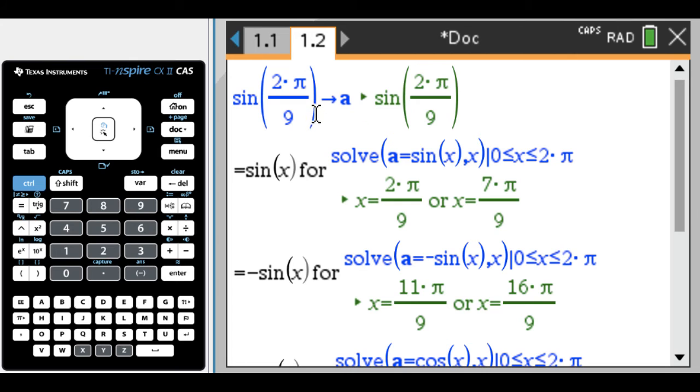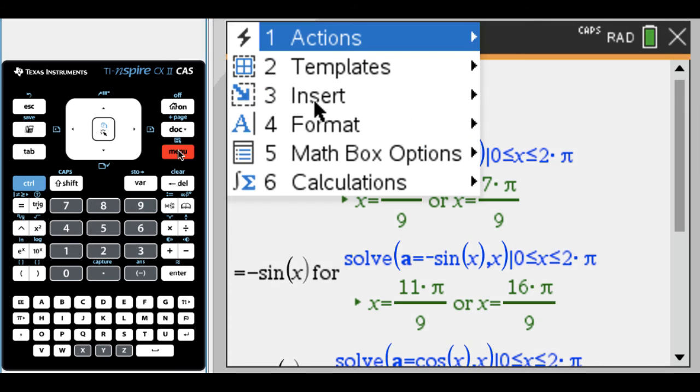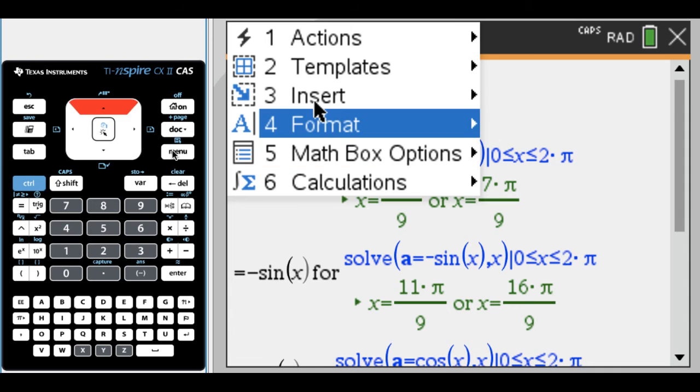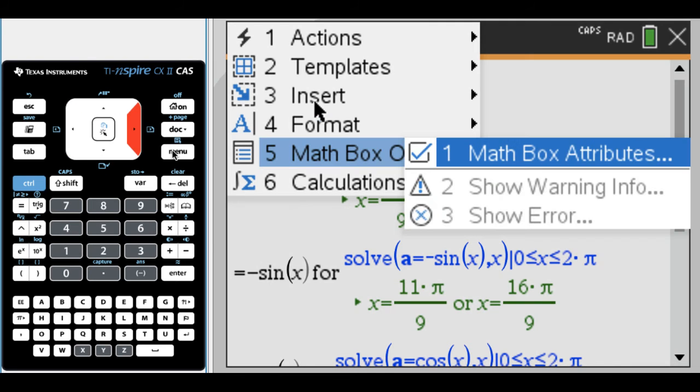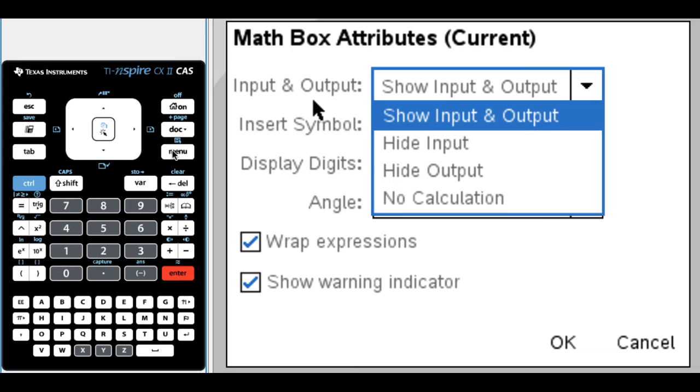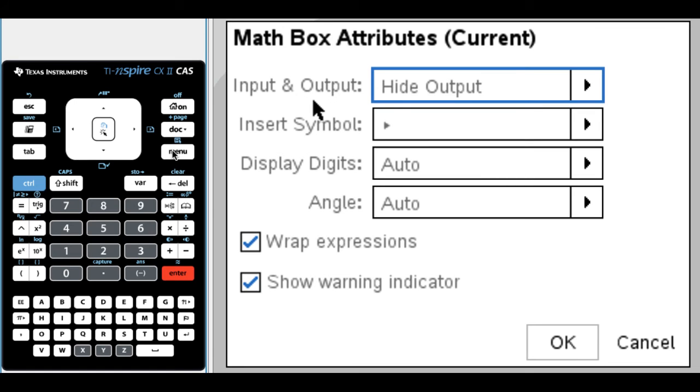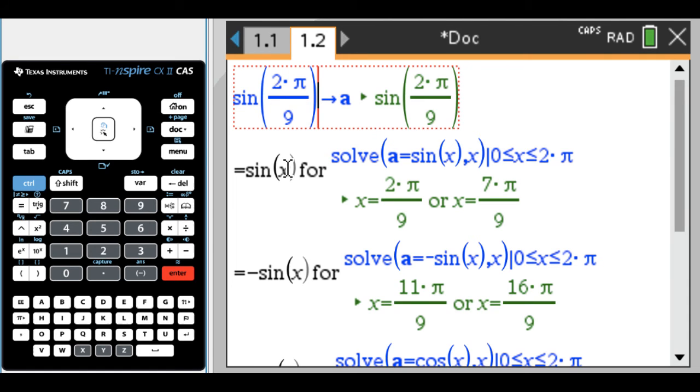So what you can do is when you're in a math box, if you press - let me see. Okay. Format. Math box options. Math box attributes. Yeah, this is I think what I want. So I actually only want to see the input for this one, so I'm going to hide the output and press okay. And then when I get out of this math box, instead of seeing all of this, it should just show me that. So you can see when I'm in the math box I see everything, but when I get out of it, it just shows the input there.